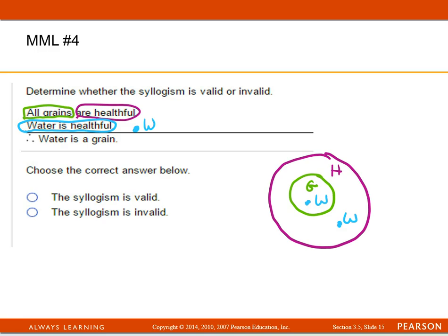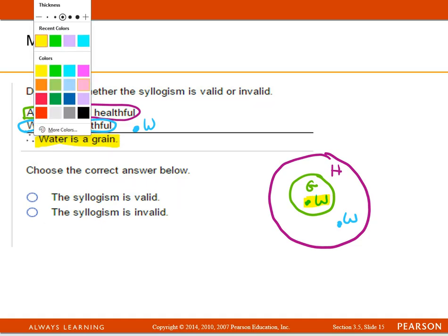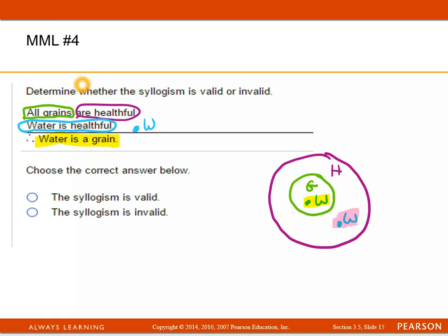So when they make the conclusion that the water is a grain, they're talking about this right here, but you've also got this possibility, and this possibility right here is enough to make it invalid. So that is number two and four.